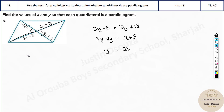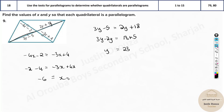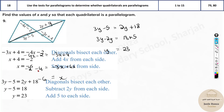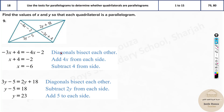For x: minus 4x minus 2 equals minus 3x plus 4. Take 4x to the other side — it's negative 4, smaller than negative 3 — and take 4 to the other side: minus 2 minus 4 equals minus 3x plus 4x, giving minus 6 equals x. So x equals negative 6 and y equals 23. The reason is that the diagonals bisect each other — it's very important to mention this statement.